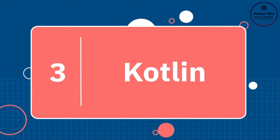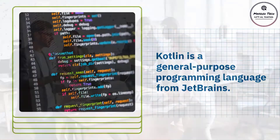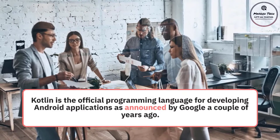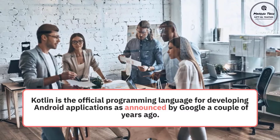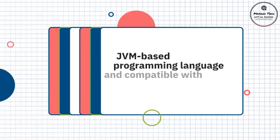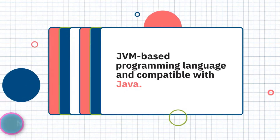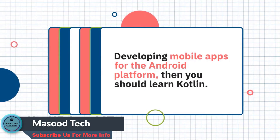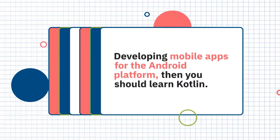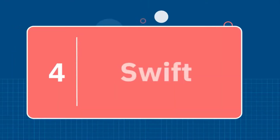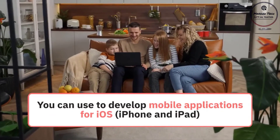Number three: Kotlin. Kotlin is a general-purpose programming language from JetBrains, the company behind tools like IntelliJ IDEA, ReSharper, and PyCharm. Kotlin is the official programming language for developing Android applications, as announced by Google a couple of years ago. It's a beautiful JVM-based programming language and compatible with Java, another popular language for developing Android applications. If you are serious about developing mobile apps for the Android platform — the world's most popular mobile platform — then you should learn Kotlin.